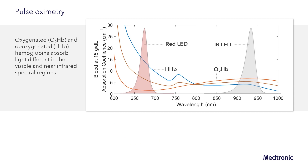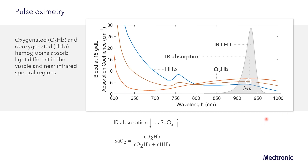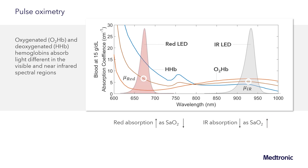In pulse oximetry, we use two LEDs to look at the absorption of the blood: a red LED in the 660 nanometer range and a near-infrared LED in the 900 nanometer range. Looking at the absorption coefficient, as blood deoxygenates — as saturation decreases going from the red curve to the blue curve — the red absorption increases. For the infrared LED, the opposite happens: as we go from the red curve to the blue curve, absorption is decreasing. The key in pulse oximetry is to use these LEDs, look at their optical signals, and relate them back to the absorption in the arterial blood.